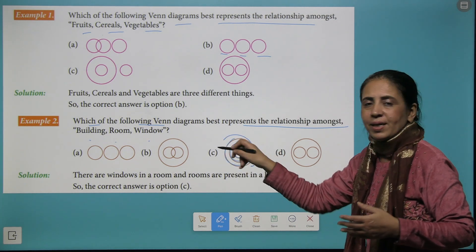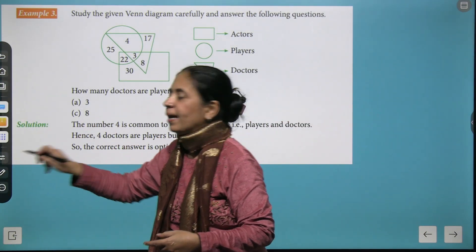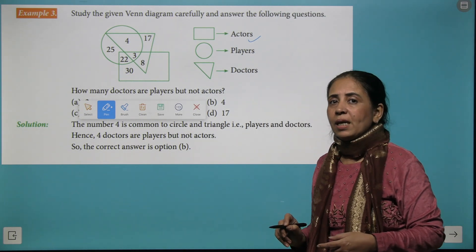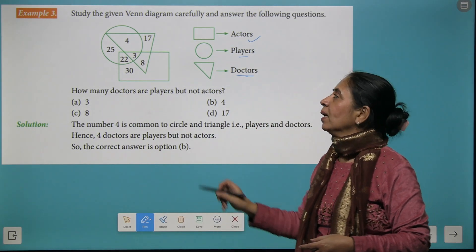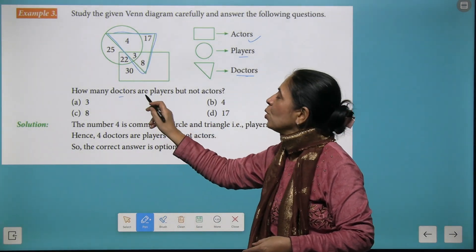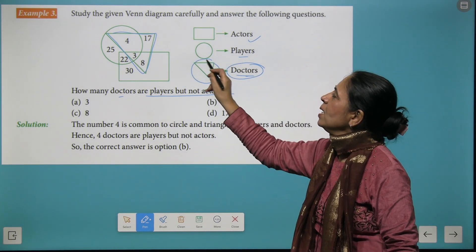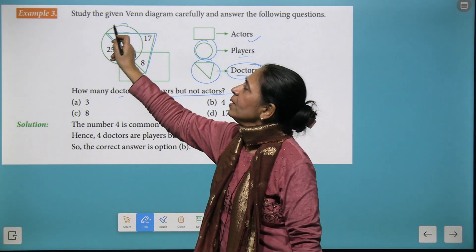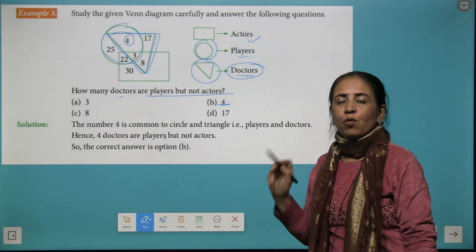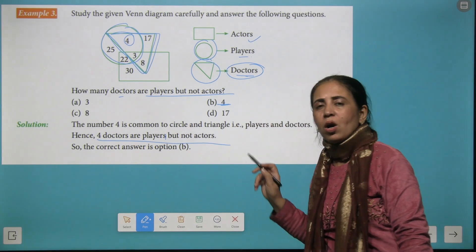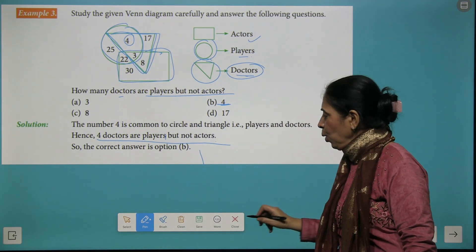Moving ahead, now we have a Venn diagram where this rectangle shows the actors, the circle shows the players, and doctors are represented with the help of a triangle. Now what's the question? How many doctors are players but not actors? So you have to find the relation between the triangle and the circle. Looking here, this is a circle and this is a triangle. The common number coming here is four. So we say that four is your right answer and we say four doctors are players but not actors because it's not coming in the category of this rectangle. I hope the concept is clear to you.